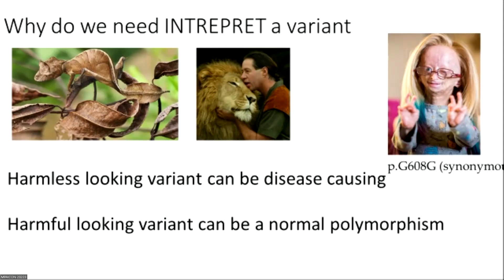That is why it is important to interpret each and every variant found in next generation sequencing and high throughput sequencing, and that is where the population databases and the known mutation databases are very helpful for our interpretation.